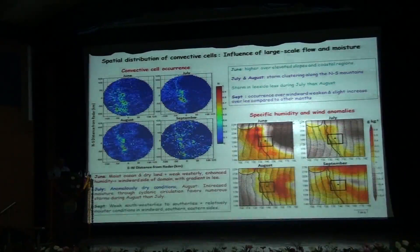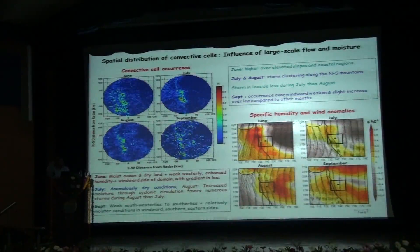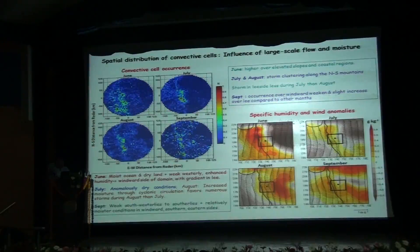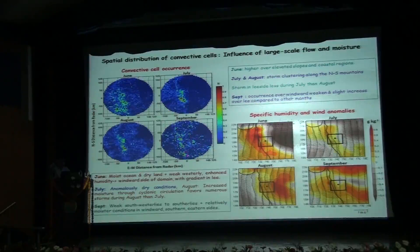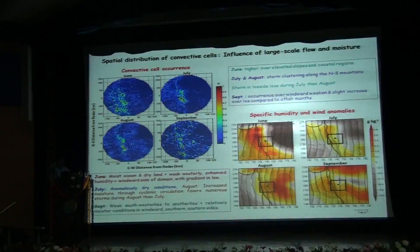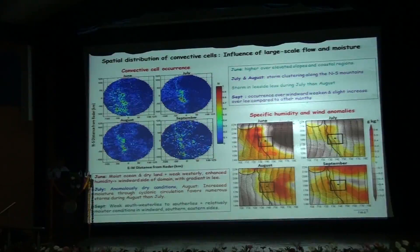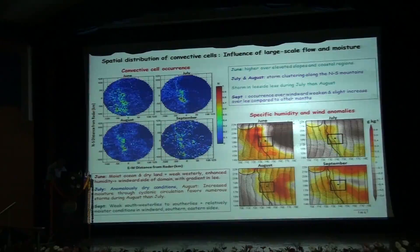Now we wanted to look at the influence of the large-scale flow and moisture on the spatial distribution of convective storms. Thus we analyzed the ECMWF specific humidity and wind anomalies at the surface. The color represents the anomalies of specific humidity and the arrows indicate the anomalies of the wind. We take a larger zone of which the black square box approximates the radar domain and the black dot approximates the radar location. So in the month of June we can see moist ocean and drier lands with weak westerlies and enhanced humidity gradient from the windward to the leeward side, which explains why there are higher storms in the elevated slopes and coastal regions.